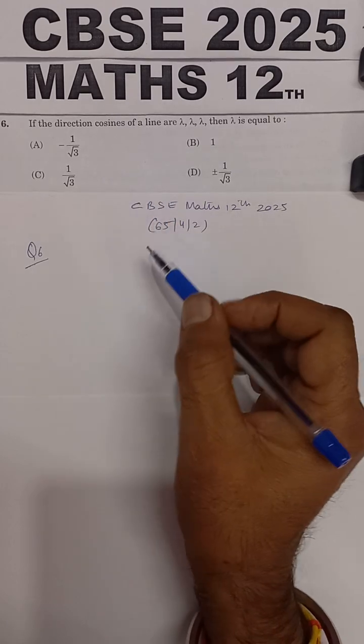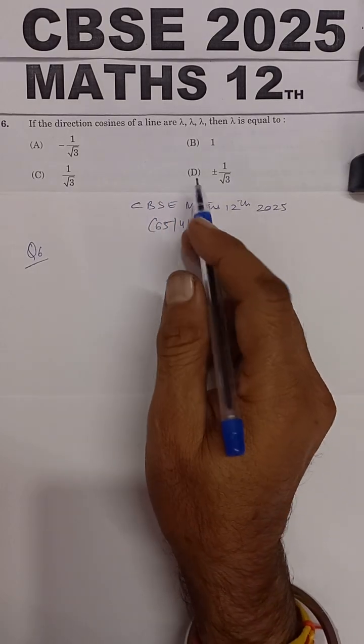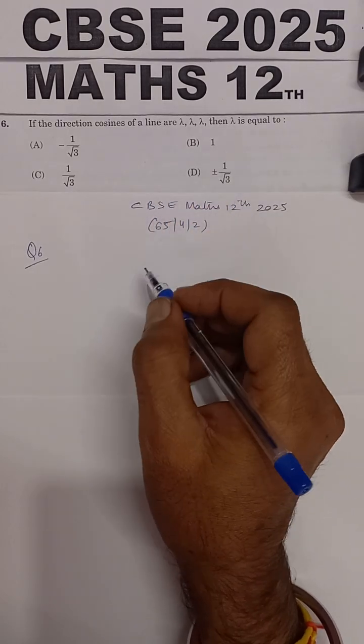Statement of the problem is: if the direction cosines of a line are lambda, lambda, lambda, then lambda is equal to?